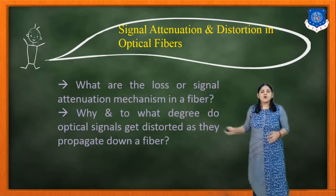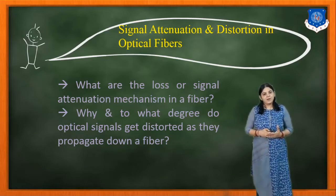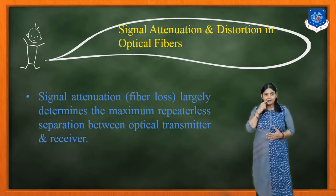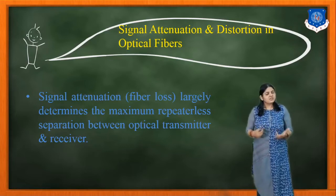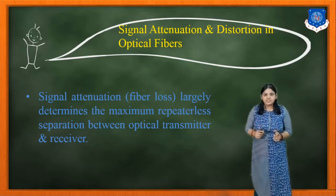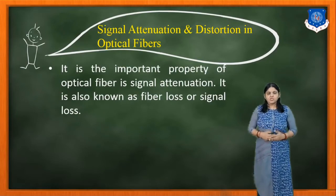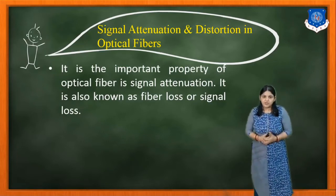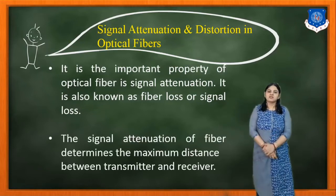Another question is: why and to what degree do optical signals get distorted as they propagate down a fiber? Signal attenuation, many a time referred to as fiber loss in optical fiber, largely determines the maximum repeaterless separation between the optical fiber transmitter and the optical receiver. It is an important property of the optical fiber, also known as fiber loss or signal loss.